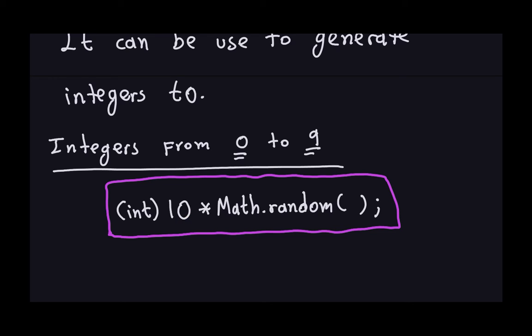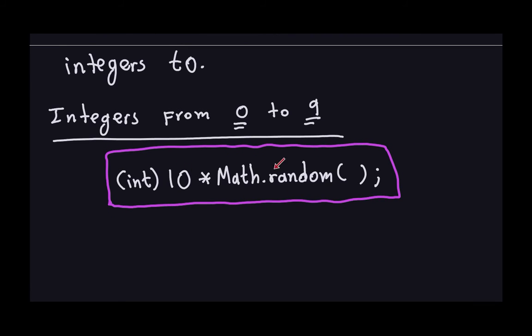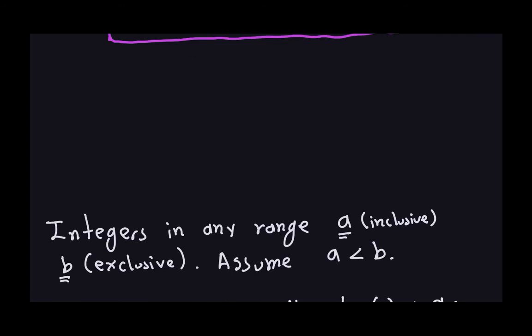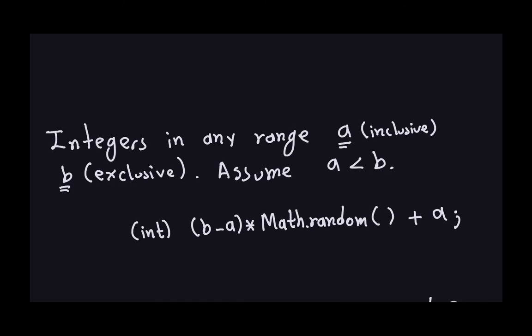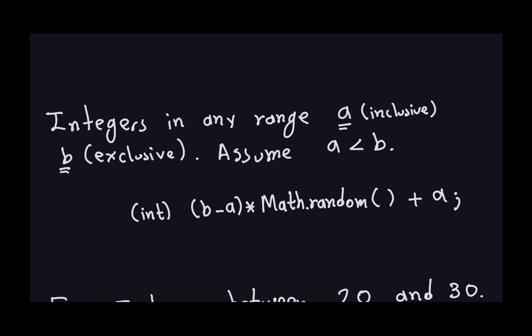You can also target other ranges — for example, integers between 20 and 30. In general, if you want pseudo-random integers between A inclusive and B exclusive, where A is strictly less than B, you can use the following formula.